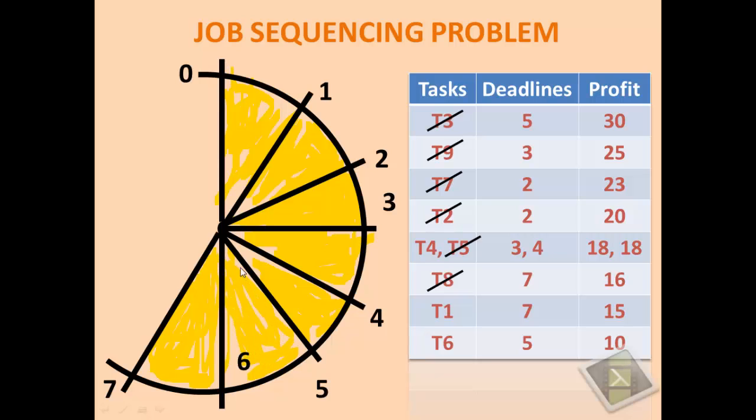And that is it. We have occupied all the given slots. And finally you can see that we are left with only 2 tasks unexecuted. That is T4 and T6.